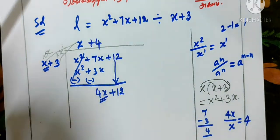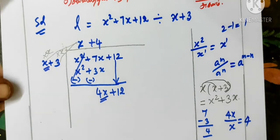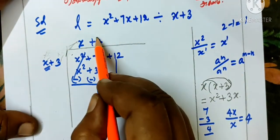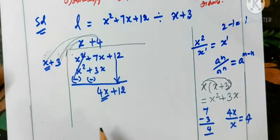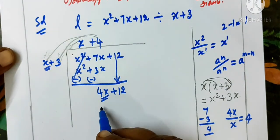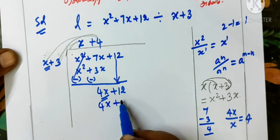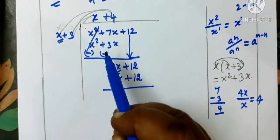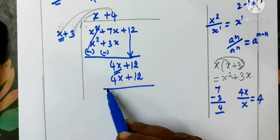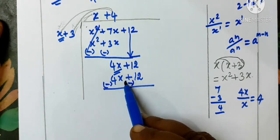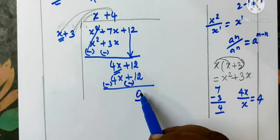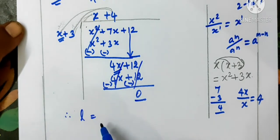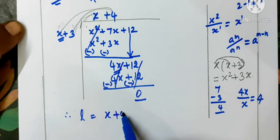Then multiply 4: 4 into x gives 4x, 4 into 3 gives 12. Now change the sign — minus — and the remainder is 0. Therefore, the length is x plus 4. So this is the answer.